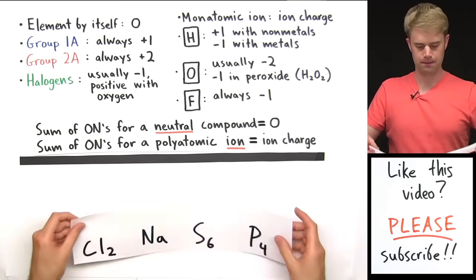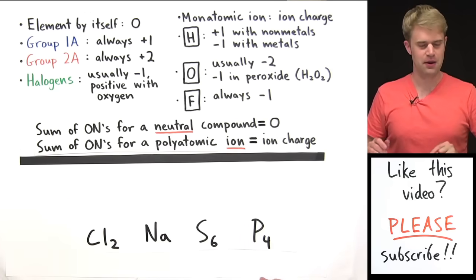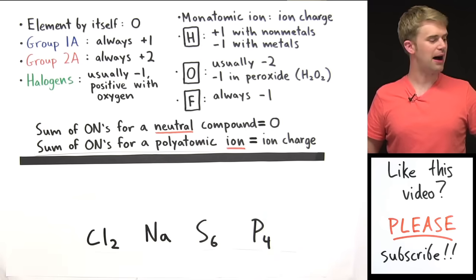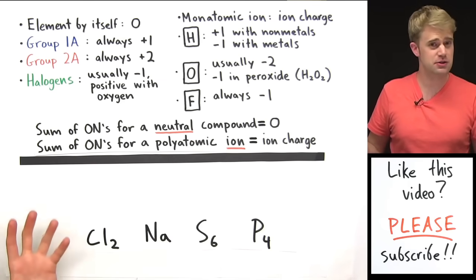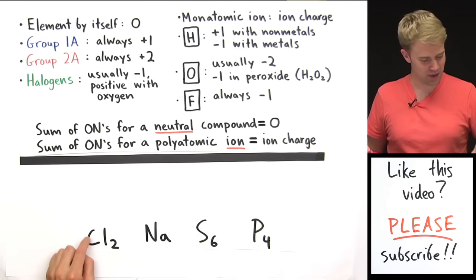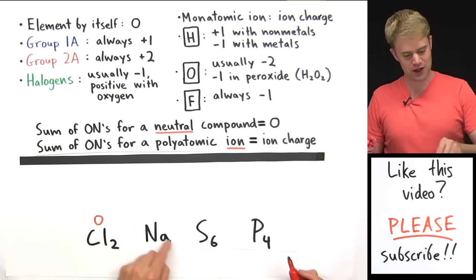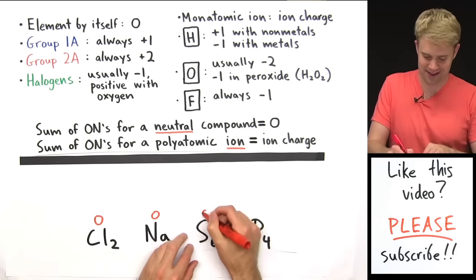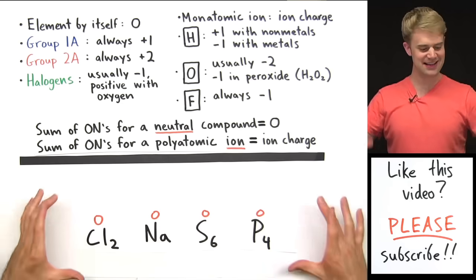There are a lot of chemical compounds that have just one element — that element is not combined with any other elements. That's what I mean by an element by itself. So that's something like Cl2. It doesn't matter how many atoms of that element you have, just as long as it's only that element and none others. So Cl2 — zero. Sodium, Na — zero. S6, just sulfur — zero. P4, phosphorus and nothing else — zero. It's always zero for the oxidation state if you have an element by itself.